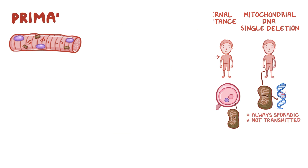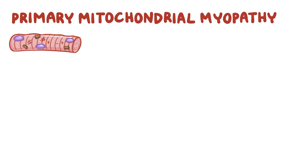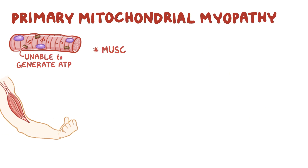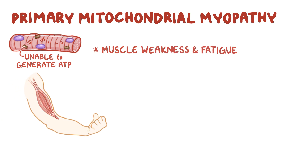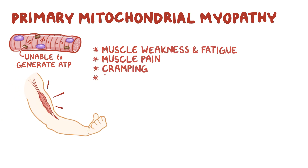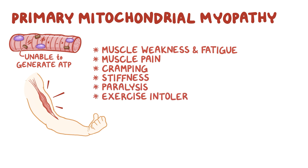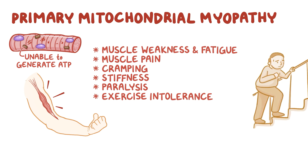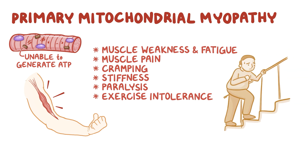In primary mitochondrial myopathy, muscle cells are unable to generate ATP, which results in muscle weakness and fatigue. Sometimes there may also be muscle pain, cramping, stiffness, or even paralysis of the muscle. Individuals typically develop exercise intolerance, which is a reduced ability to perform physical activity.